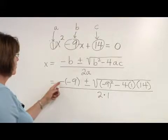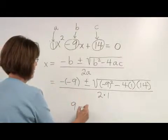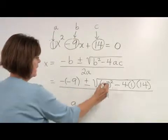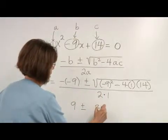Okay, so we have the opposite of negative 9, which is 9, plus or minus the square root of negative 9 squared. Negative 9 times negative 9 is 81.